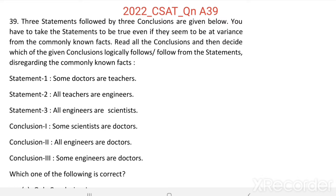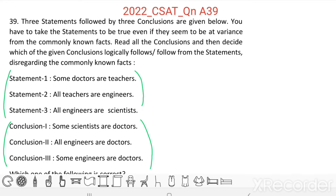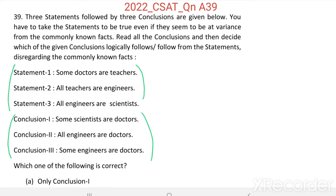Based on these three statements, three conclusions are also given. We need to find which of the conclusions are correct based on the given statements. This is a problem from syllogism. Syllogism problems can be solved by drawing Venn diagrams.